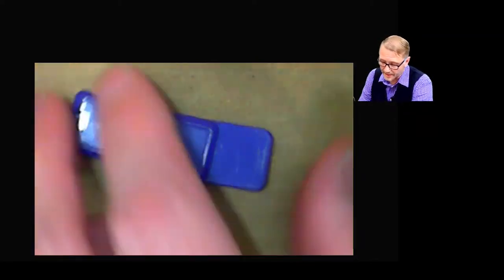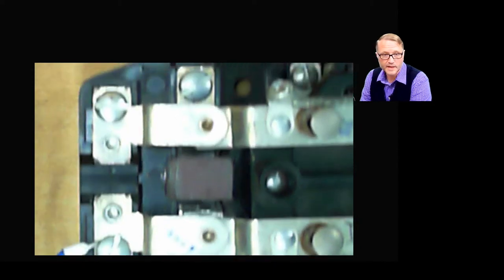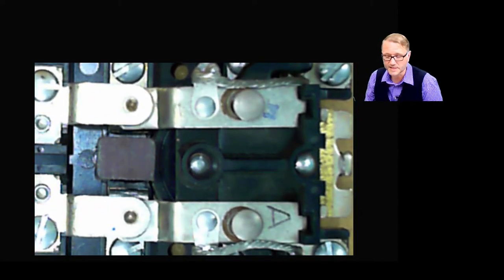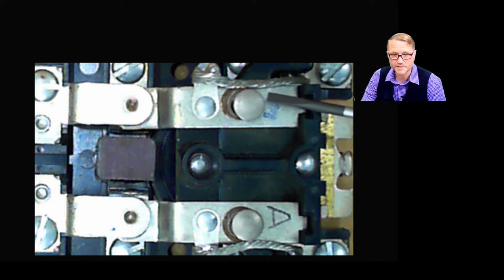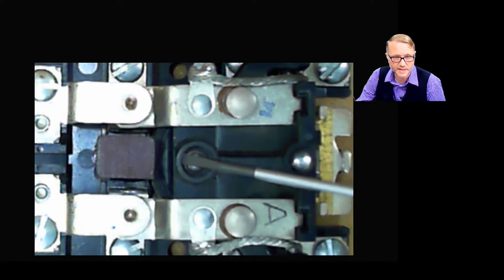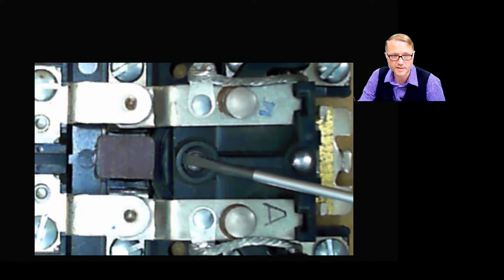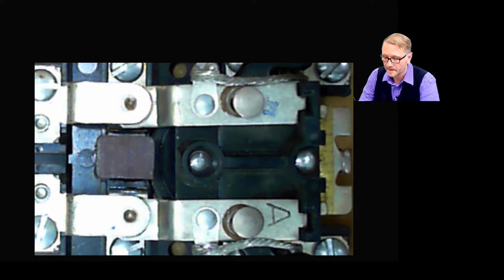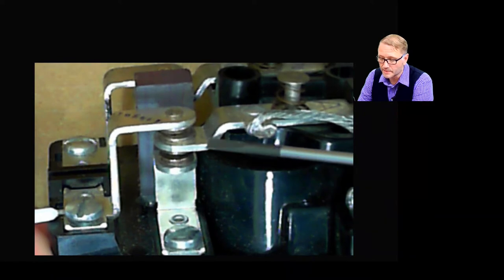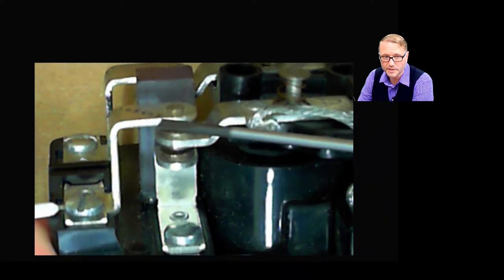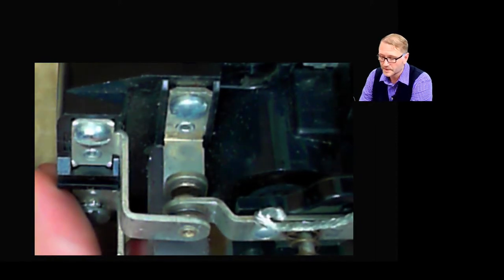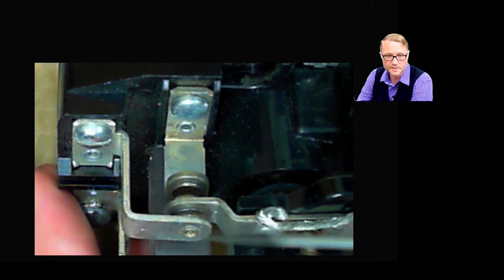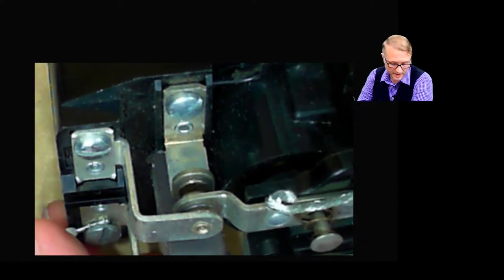This relay actually has two pairs of contacts. We would call these poles. So here's the A pole and here's the B pole. You can see that they are mechanically coupled together on the armature. The A pole has a movable contact, a normally closed, normally open, and the B has independent contacts as well. Here's the movable, here's the normally closed, and there's the normally open contact.